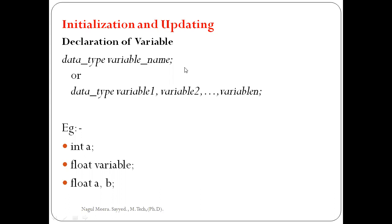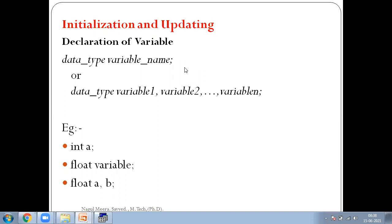The declaration error means a variable is used in the program but that variable is not declared. If our program shows a declaration error or 'unknown variable', it means that variable is used without declaration. So if we want to use, initialize, or update a variable, we must first declare it. This applies not only in C, but also in C++ and Java.